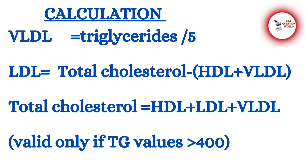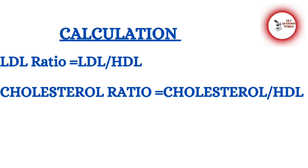For VLDL: VLDL = Triglycerides ÷ 5. For LDL: LDL = Total Cholesterol − (HDL + VLDL). Total Cholesterol = HDL + LDL + VLDL. These calculations are valid only if triglyceride values are below 400 mg/dL. If triglycerides are above 400 or LDL is very high, LDL should be estimated using reagent, not calculated. LDL ratio = LDL ÷ HDL; Cholesterol ratio = Total Cholesterol ÷ HDL.